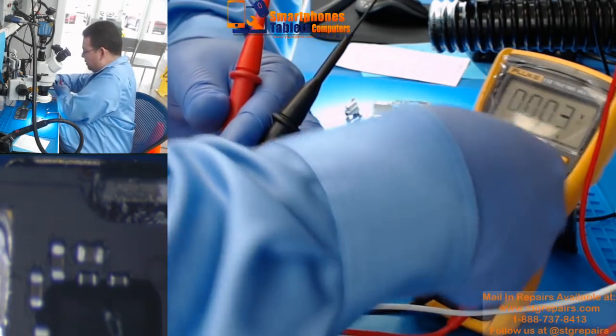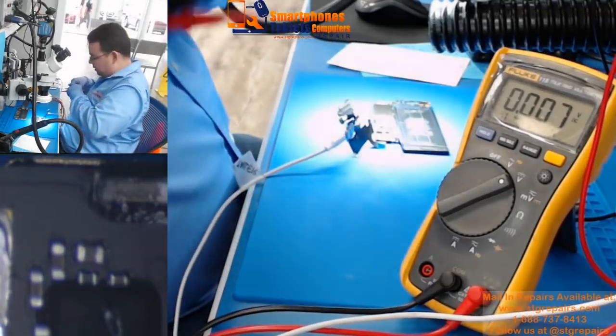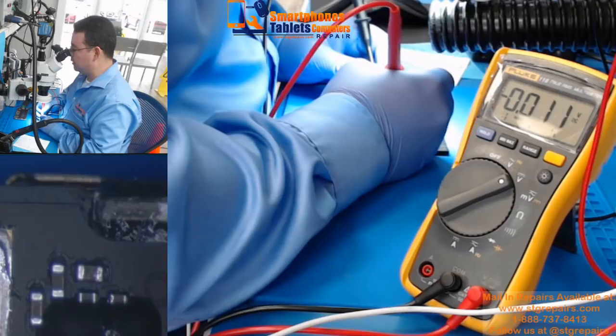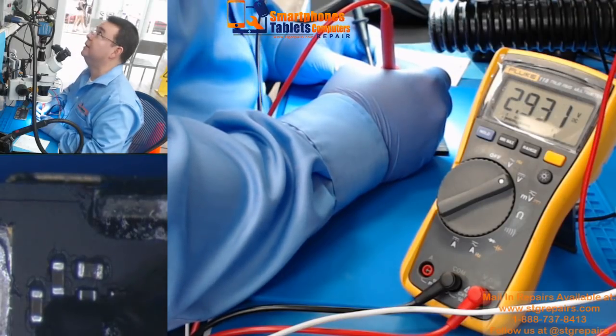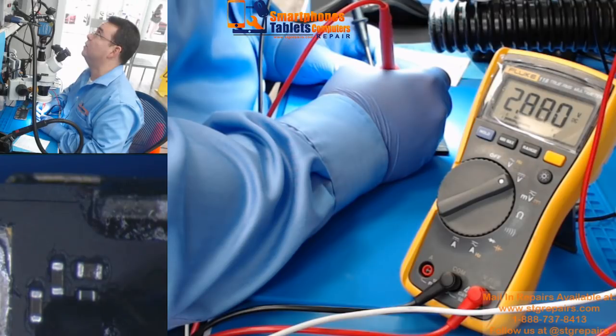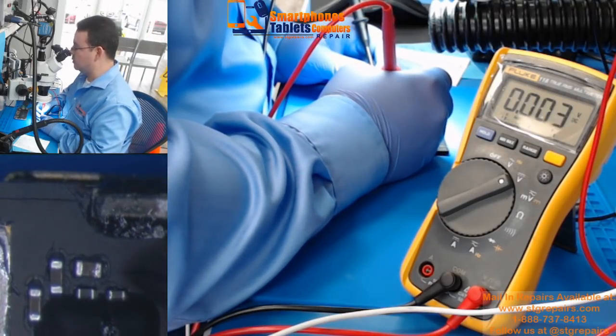So we change the multimeter. Ground to ground, then we're going to touch the cap. On this cap I'm supposed to get 3 voltage. I'm getting 2.9.